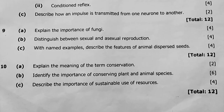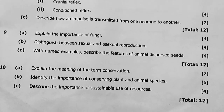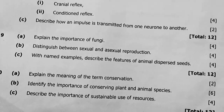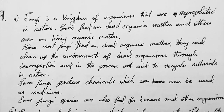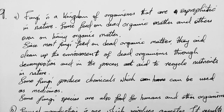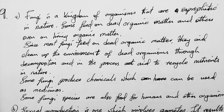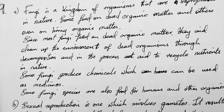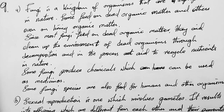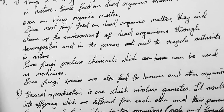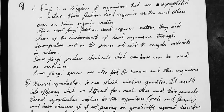Question 9: explain the importance of fungi. Fungi is a kingdom of organisms that are saprophytic in nature — some feed on dead organic matter and others on living organic matter. By saprophytic we mean they release enzymes into the substrate then absorb end products. Since most fungi feed on dead organic matter, they help clean up the environment of dead organisms through decomposition — they are decomposers — and in the process aid to recycle nutrients in nature. Some fungi produce chemicals used as medicines, and some fungi species are also food for animals and other organisms.